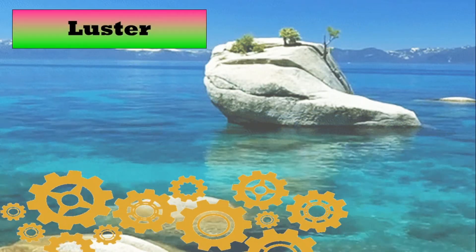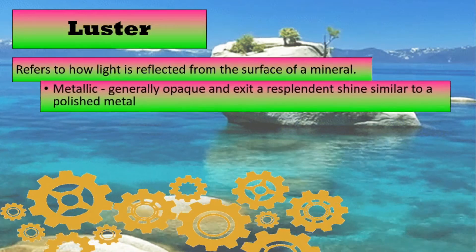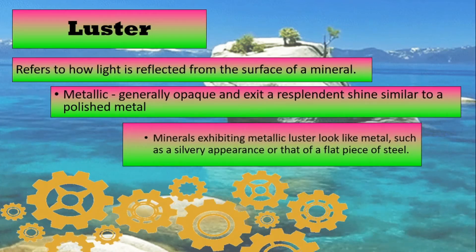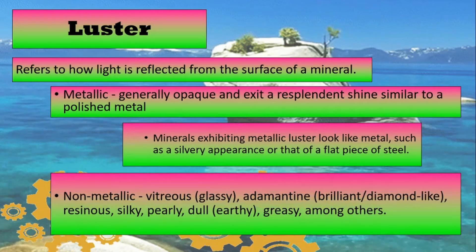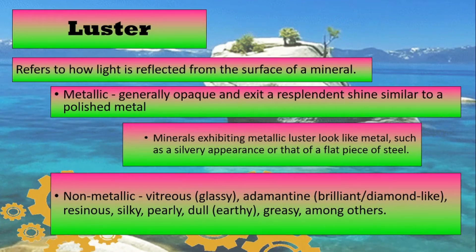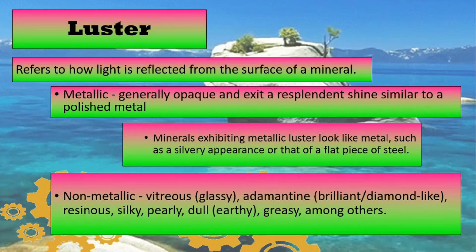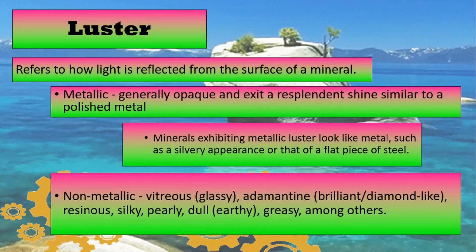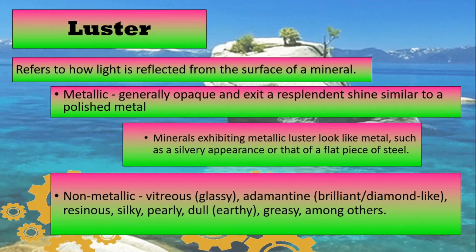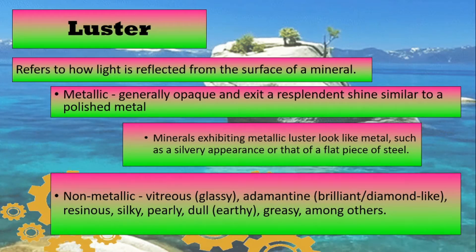Let's first talk about luster. It refers to how light is reflected from the surface of a mineral. There are two types of luster: metallic luster and non-metallic luster. Metallic luster is generally opaque and exhibits a resplendent shine similar to a polished metal. Minerals exhibiting metallic luster look like a metal, such as a silvery appearance or that of a flat piece of steel.